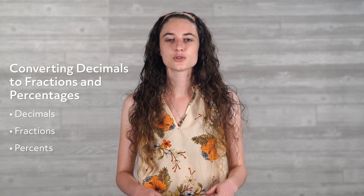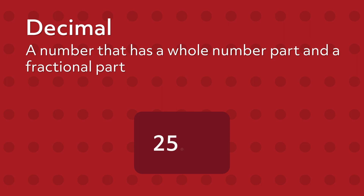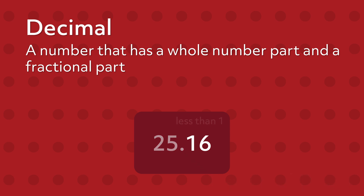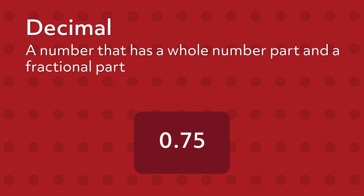Before we get started, let's review a few things. First, a decimal is a number that has a whole number part and a fractional part. Separating these parts is a dot called a decimal point. The digits that come after the decimal point show a value that is less than 1. For instance, in the number 25.16, 25 is the whole number part and the fractional part is 0.16, which comes after the decimal point. In the number 0.75, the whole number part is 0 and the fractional part is 0.75. 0.75 is a decimal that is less than 1.